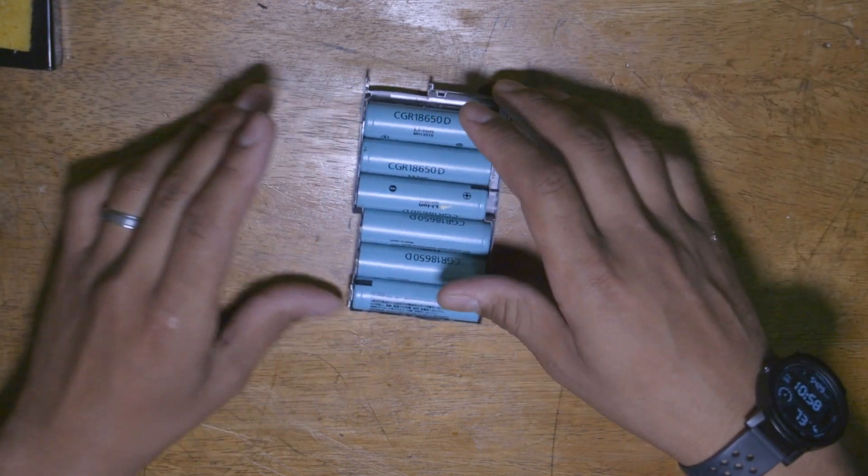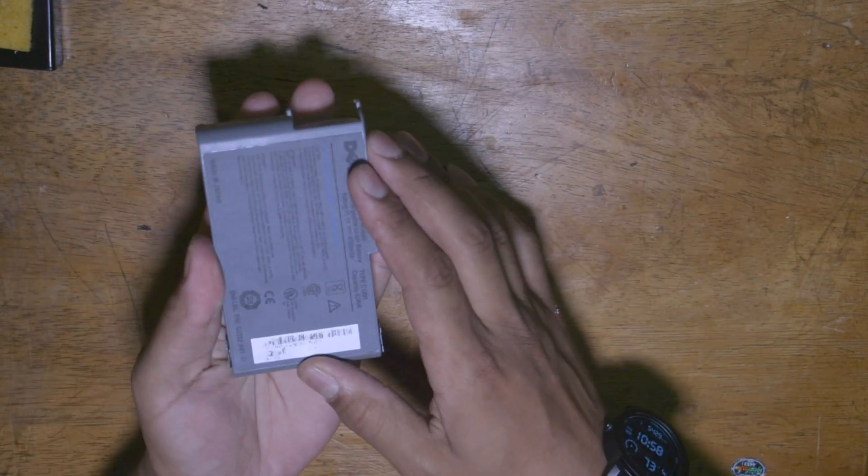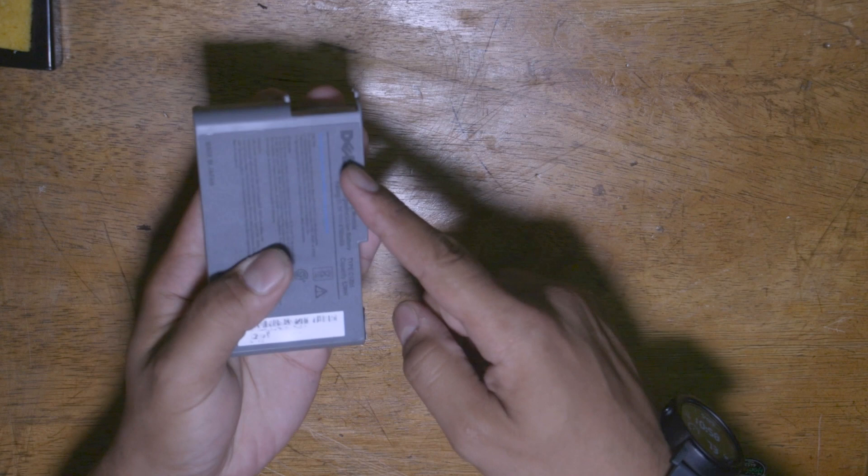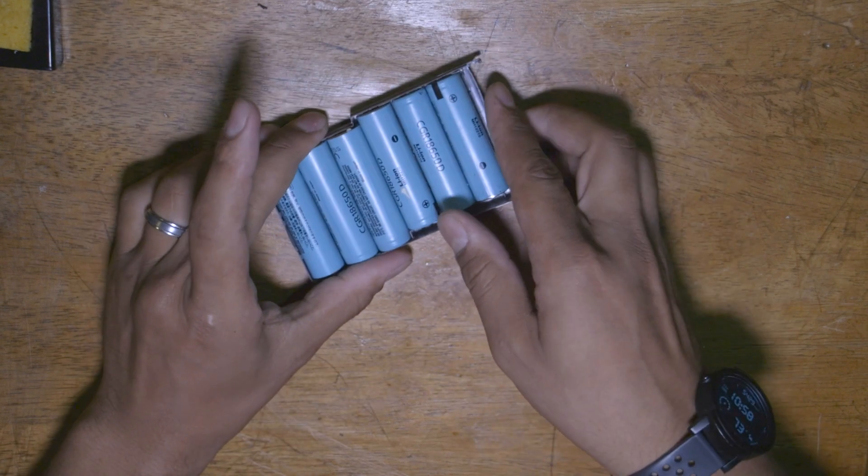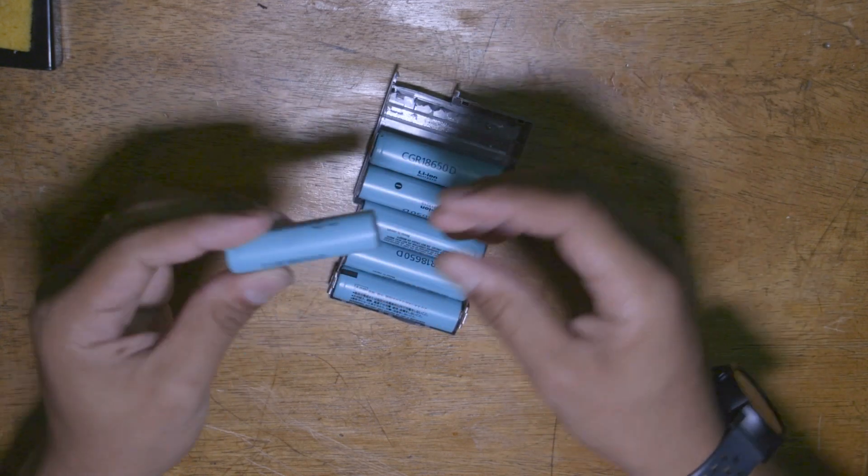So I'm going to show you a little thing that I put together. This is a laptop battery pack. It was a Dell. I opened it up. I have six batteries in here. I've charged each of them individually.